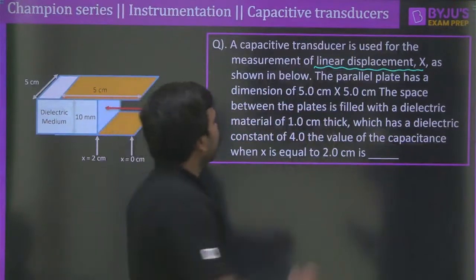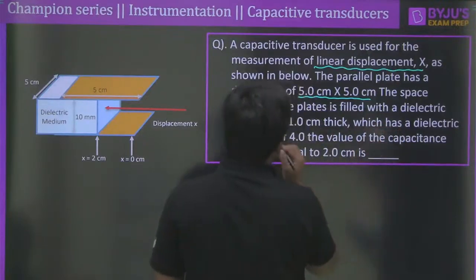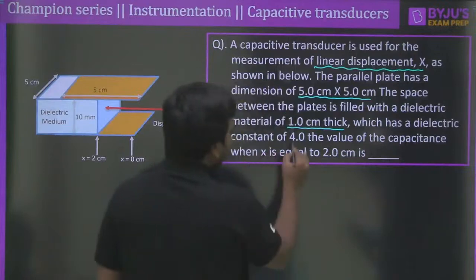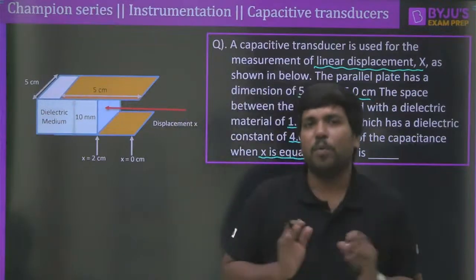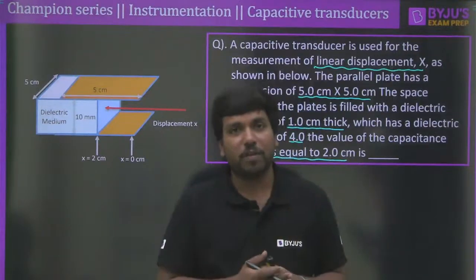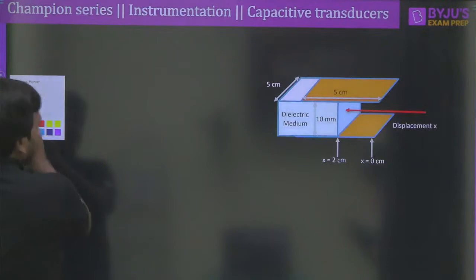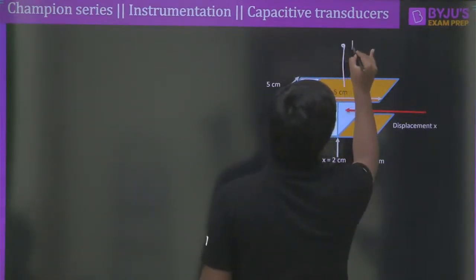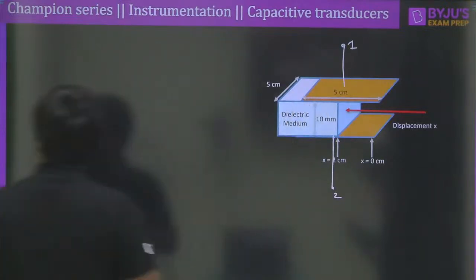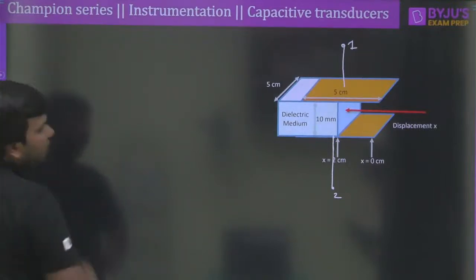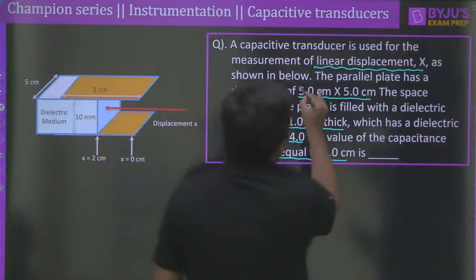These kinds of questions are very popular not only in GATE but also in PSU examinations. To solve this, you must understand how the capacitance is formed. We have two terminal plates — upper and lower — and the plate area of overlapping is 5 cm × 5 cm, so length is 5 cm and width is 5 cm.